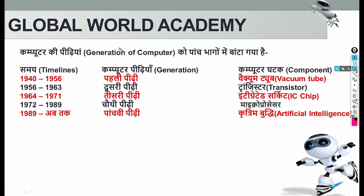We have to discuss a total of five generations today. We will also discuss some exam questions. In the exam, questions are asked about these five parts. The first generation used the vacuum tube.